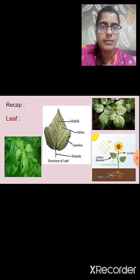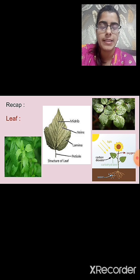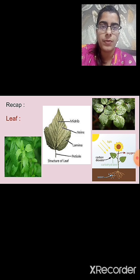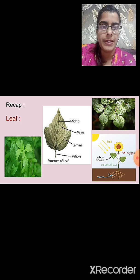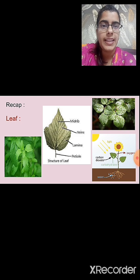What is petiole? The part of the leaf that is attached to the stem is the petiole. The broad green portion of the leaf is known as the lamina. In the middle of the leaf we see a prominent line, which is known as the midrib.